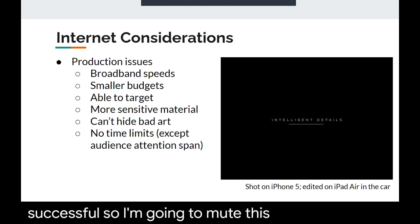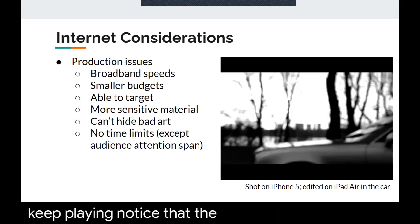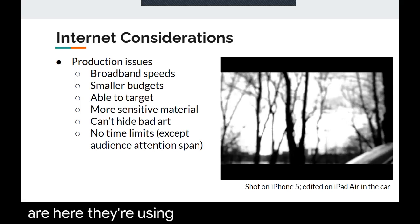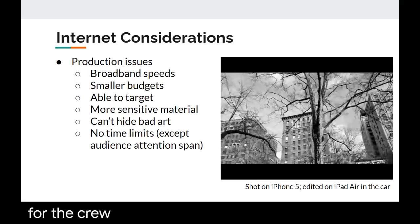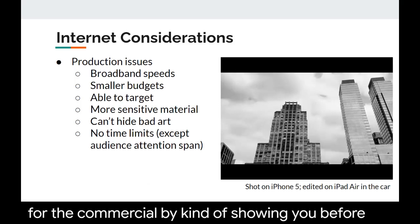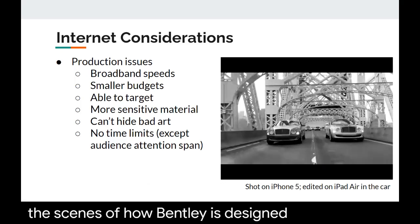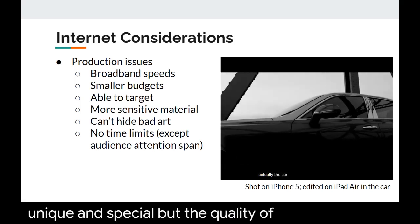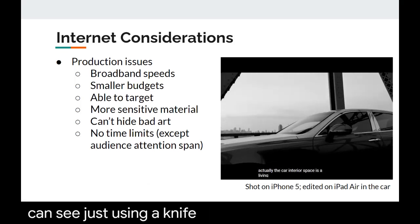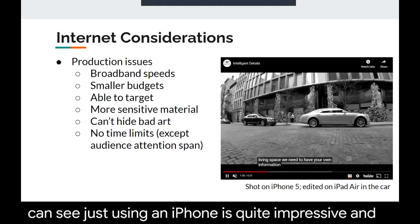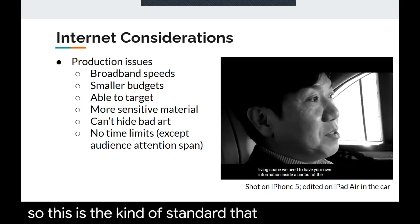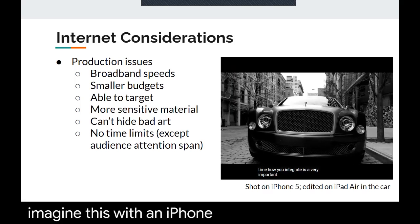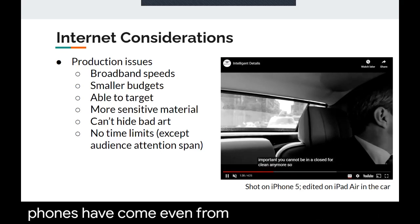I'm going to mute this but allow it to keep playing. Notice the quality of images here — they're using narrative structure as a format for the commercial, showing you behind the scenes of how Bentley is designed and what makes it unique and special. But the quality of footage you can see just using an iPhone is quite impressive. This is the kind of standard we should be shooting for even with digital commercials. And just imagine this is with an iPhone 5 — think about how far phones have come even from this.